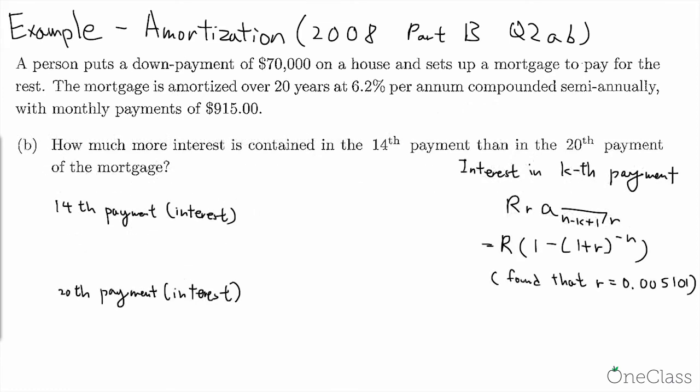So now let's proceed to part B of the question. How much more interest is contained in the 14th payment than in the 20th payment of the mortgage? Here we'll be using the equation of interest in kth payment. We see that this is the equation that's given in the concept video. However, I have went further and simplified the equation so it becomes like this, because there is an R in the denominator of annuity and it cancels out with this R.